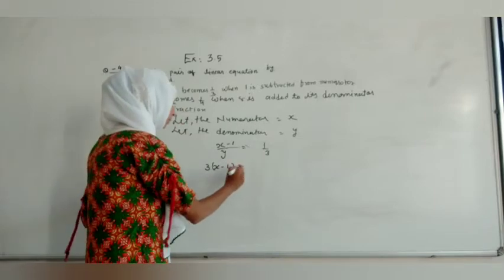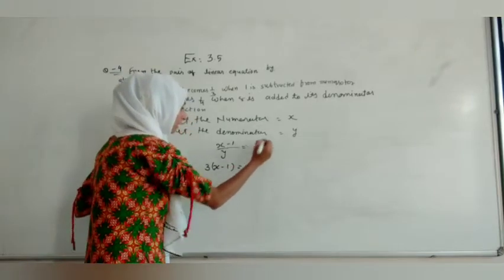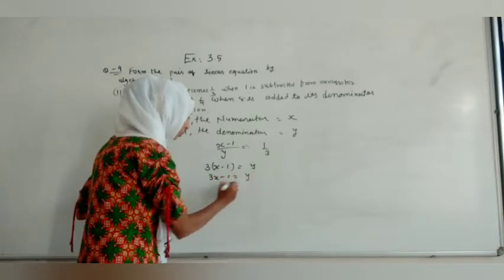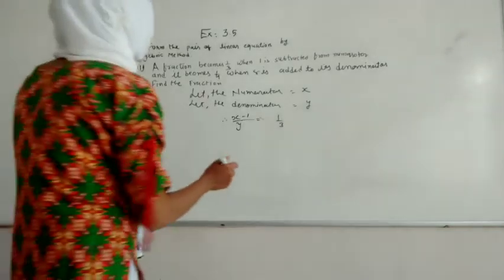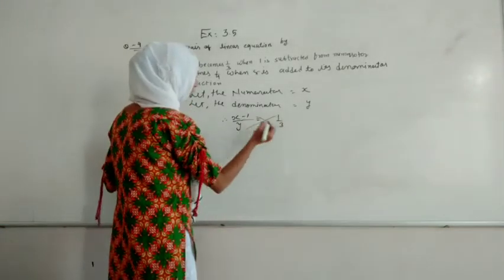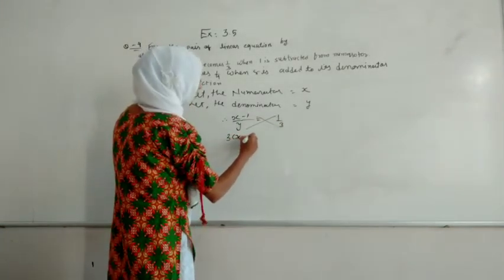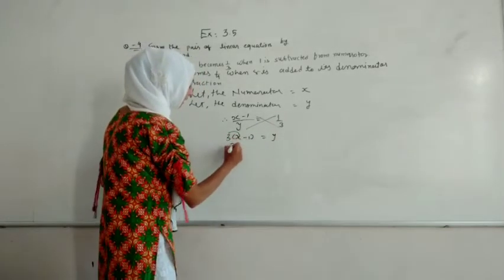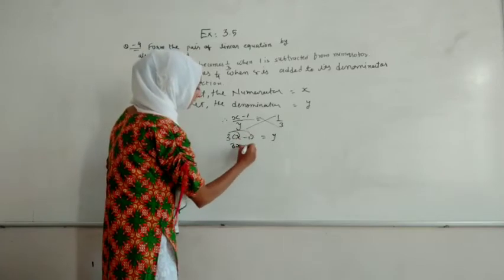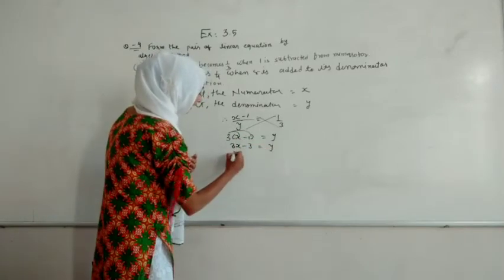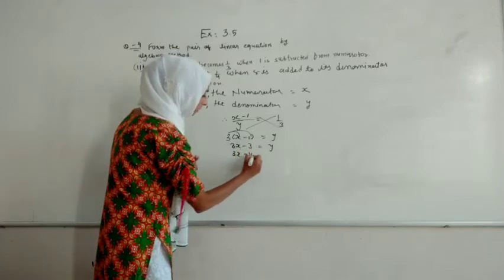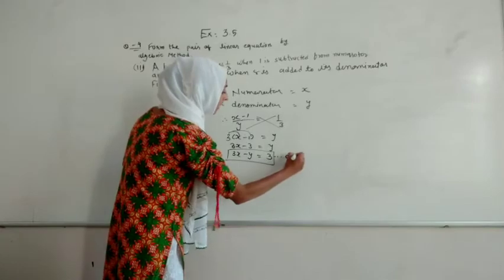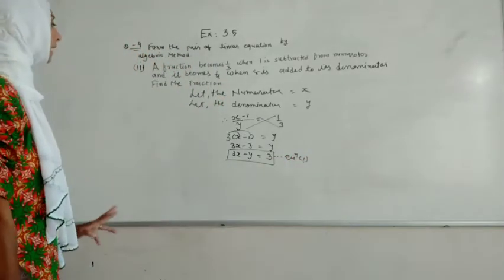Doing cross multiplication: 3 goes to the other side, giving 3 into (X minus 1) equals Y. Expanding: 3X minus 3 equals Y. Taking Y to the left side: 3X minus Y equals 3. That is our equation number 1.